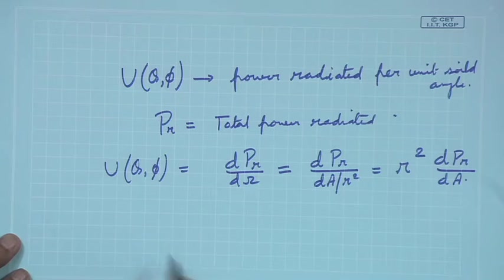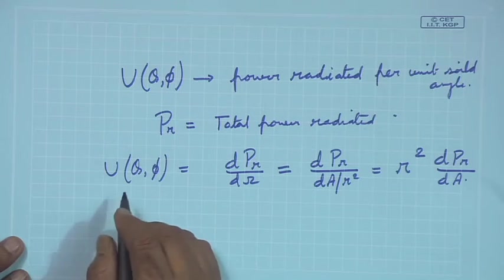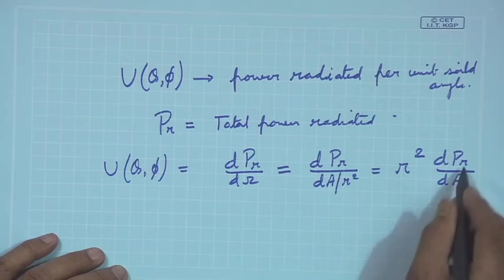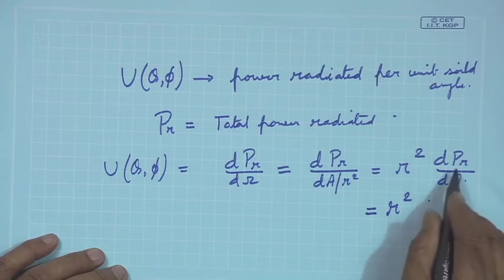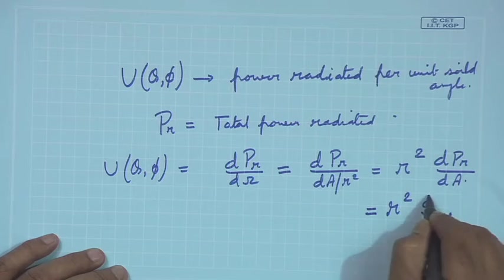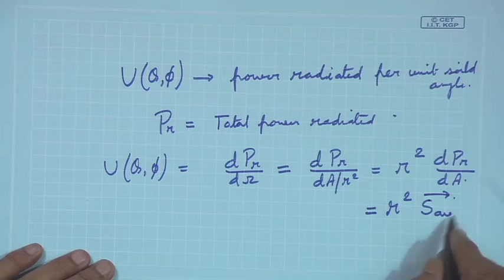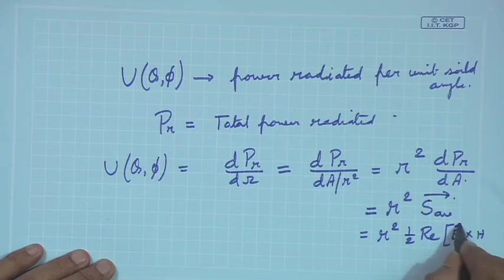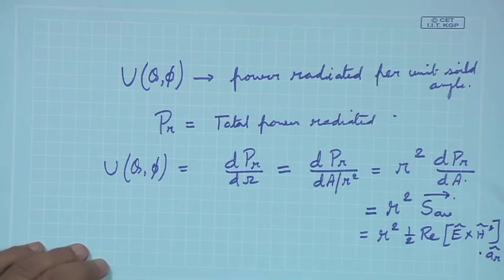We can find dP_r/dΩ. We know dP_r/dA is power per unit area, which is nothing but our time-average Poynting vector S_av. We have already found S_av, so U(θ, φ) = r² × S_av, and this is the time-average power density.